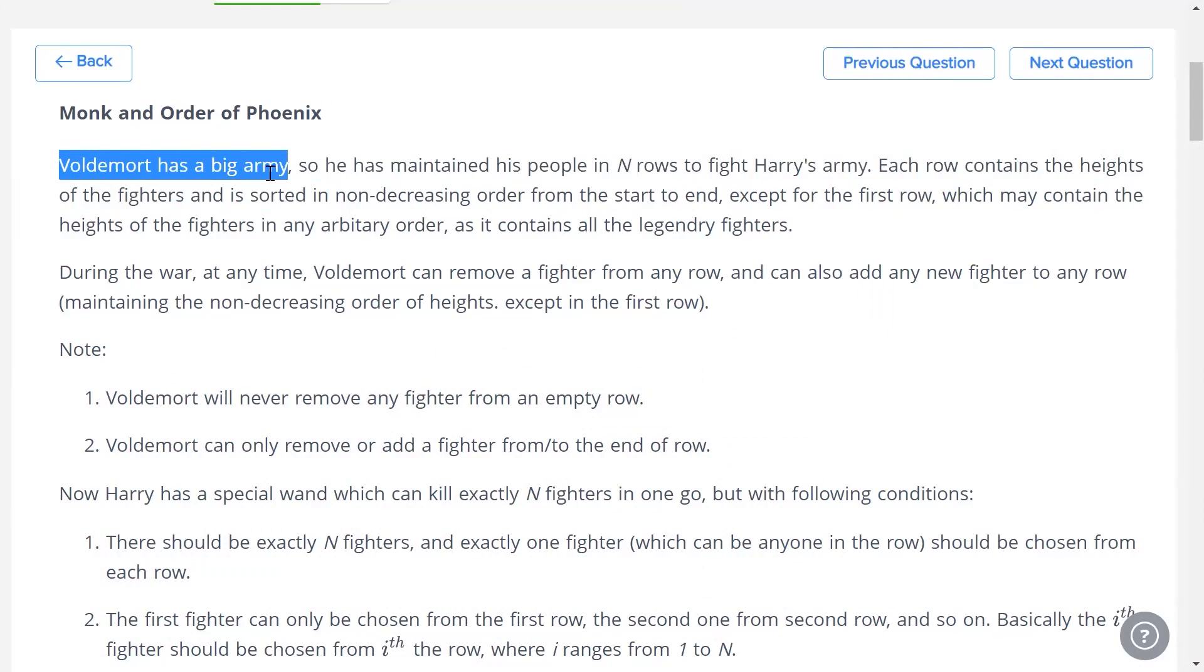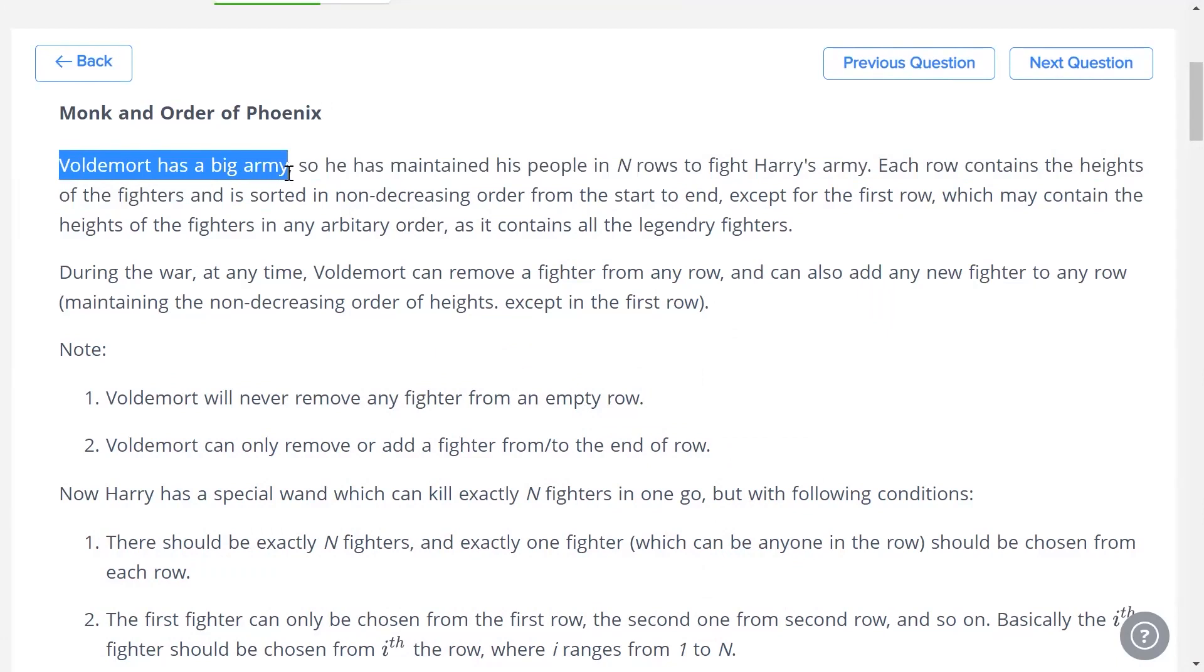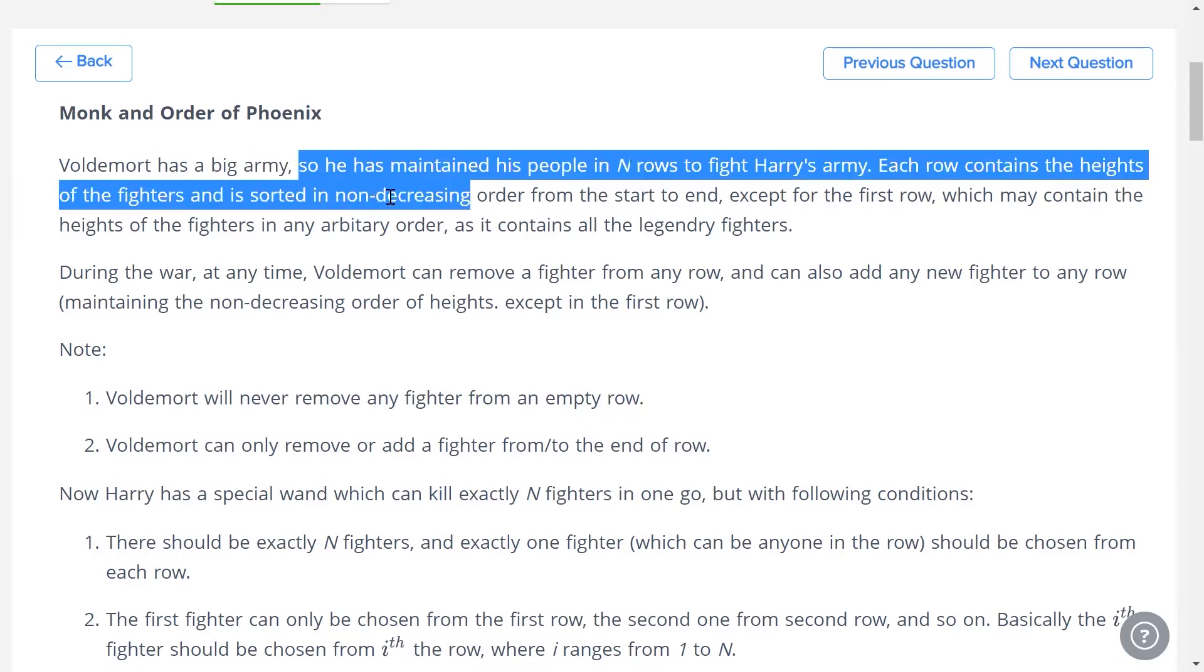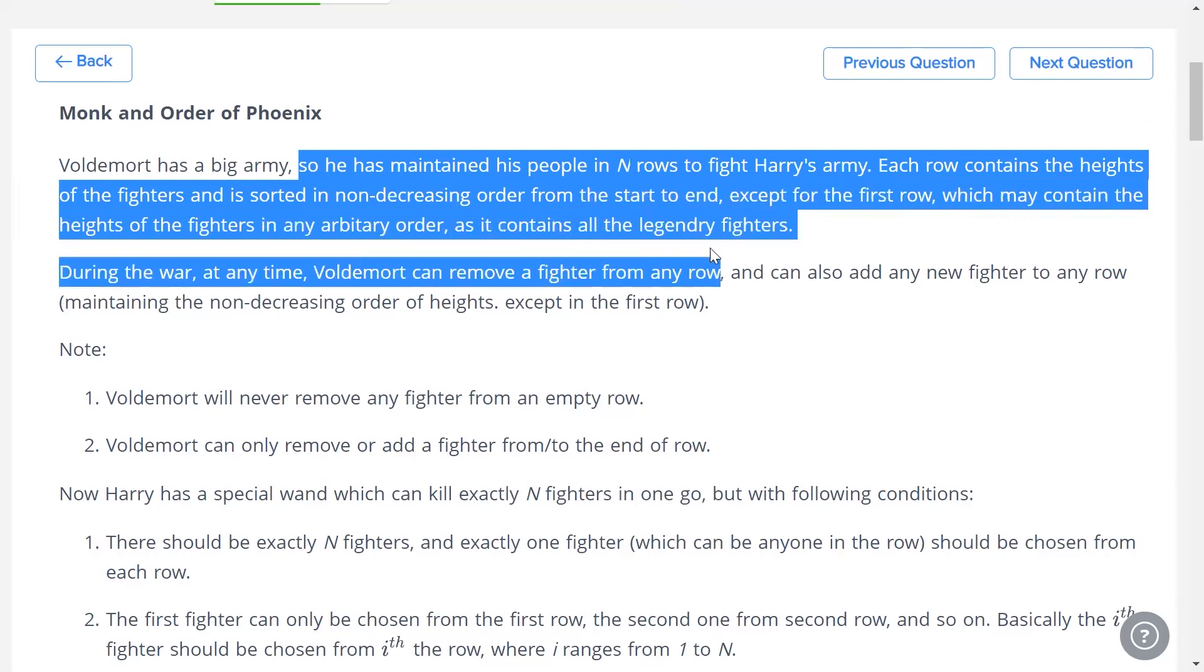Voldemort has a big army. A brave problem mentioning him by name. He has maintained his people in N rows to fight Harry's army. Each row contains the heights of the fighters and is sorted in non-decreasing order except for the first row, which may contain the heights of the fighters in any order.